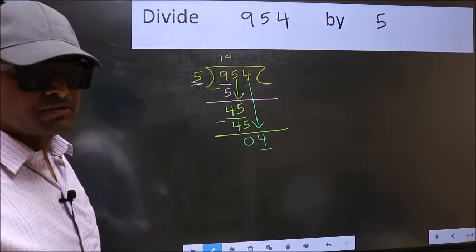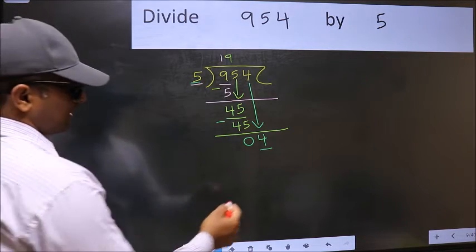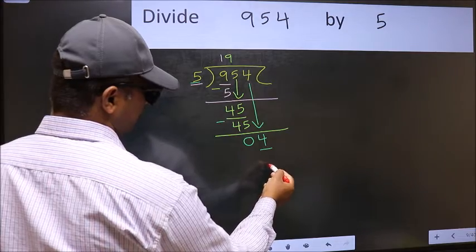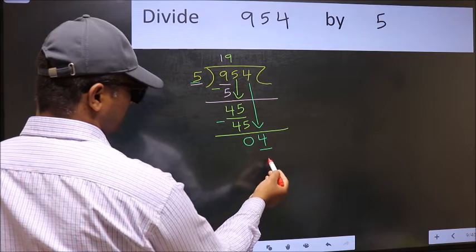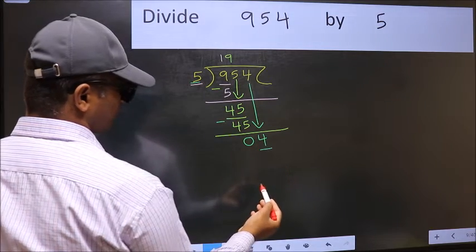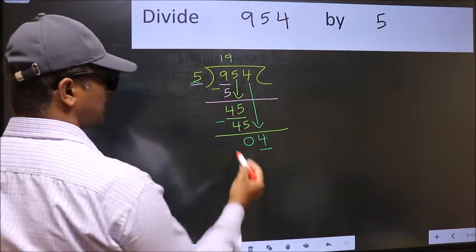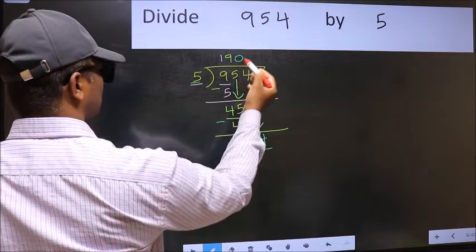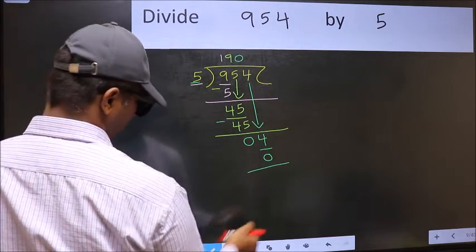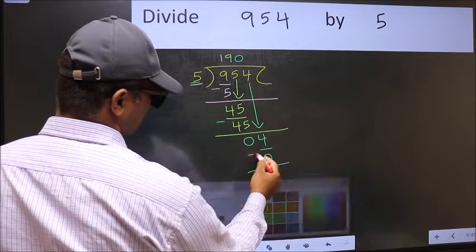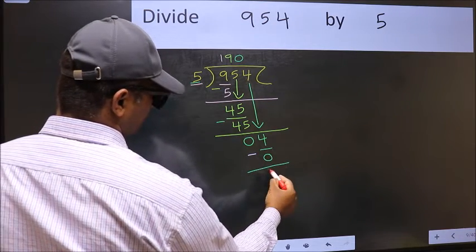Instead, what you should think of doing is, what number should we write here? If I take 1, we will get 5. But 5 will be larger than 4. So what we should do is, we should take 0. So 5 into 0, 0. Now you should subtract. 4 minus 0, 4.